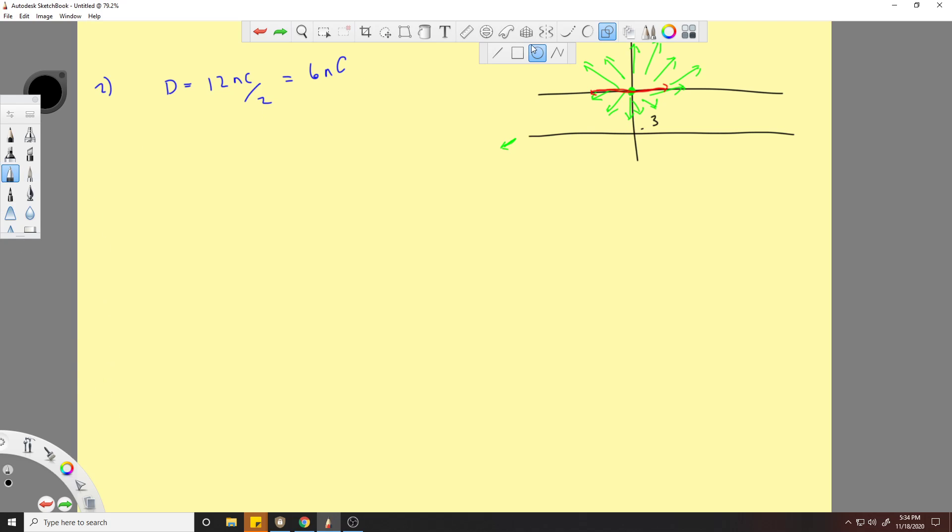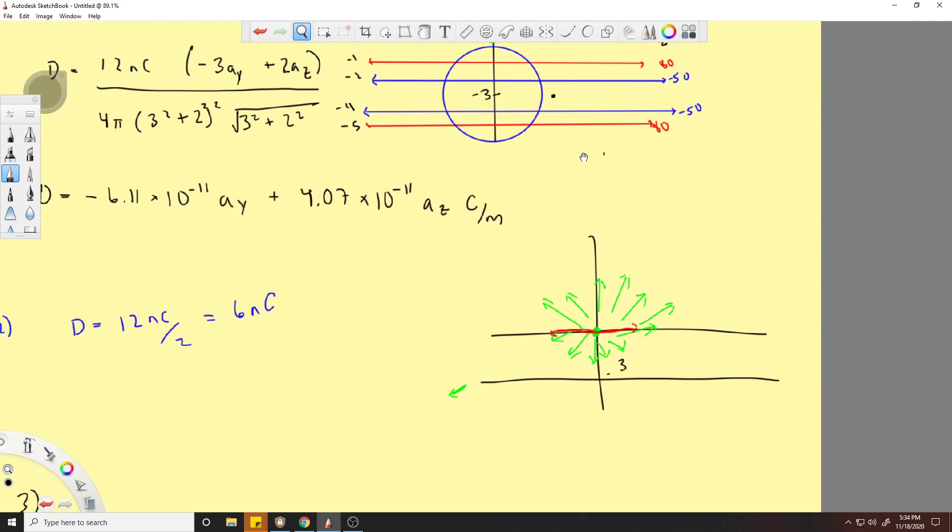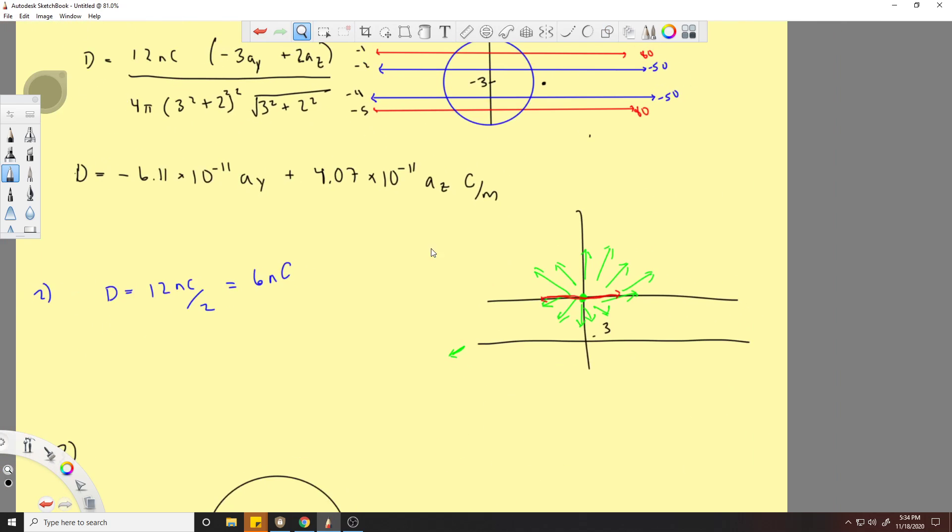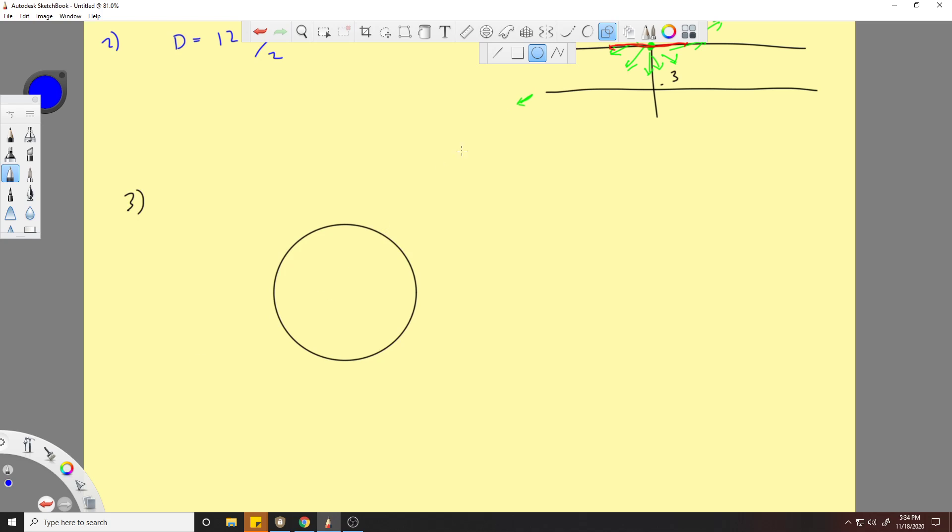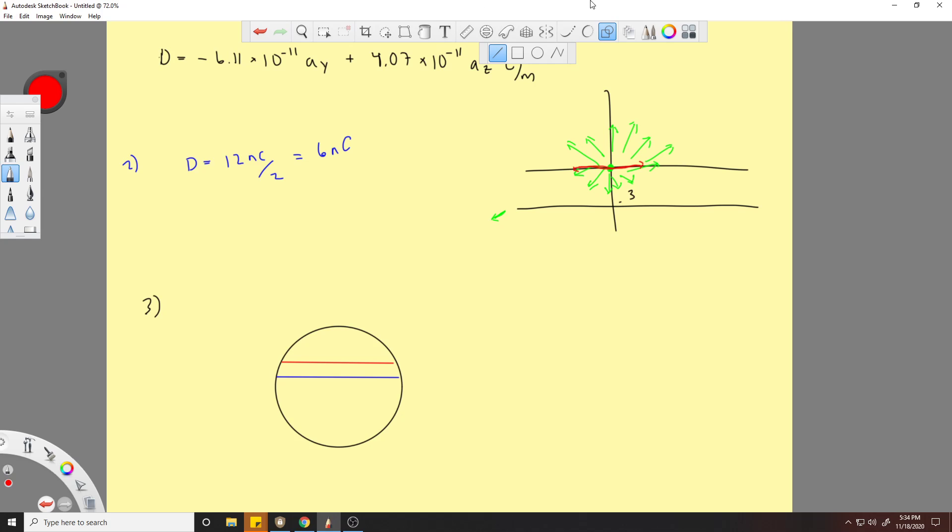I'm going to draw out the circle here. Now I'm going to put these two line charges here inside the circle, so we got a blue one and we got a red one. This one's 80 and this one's negative 50.